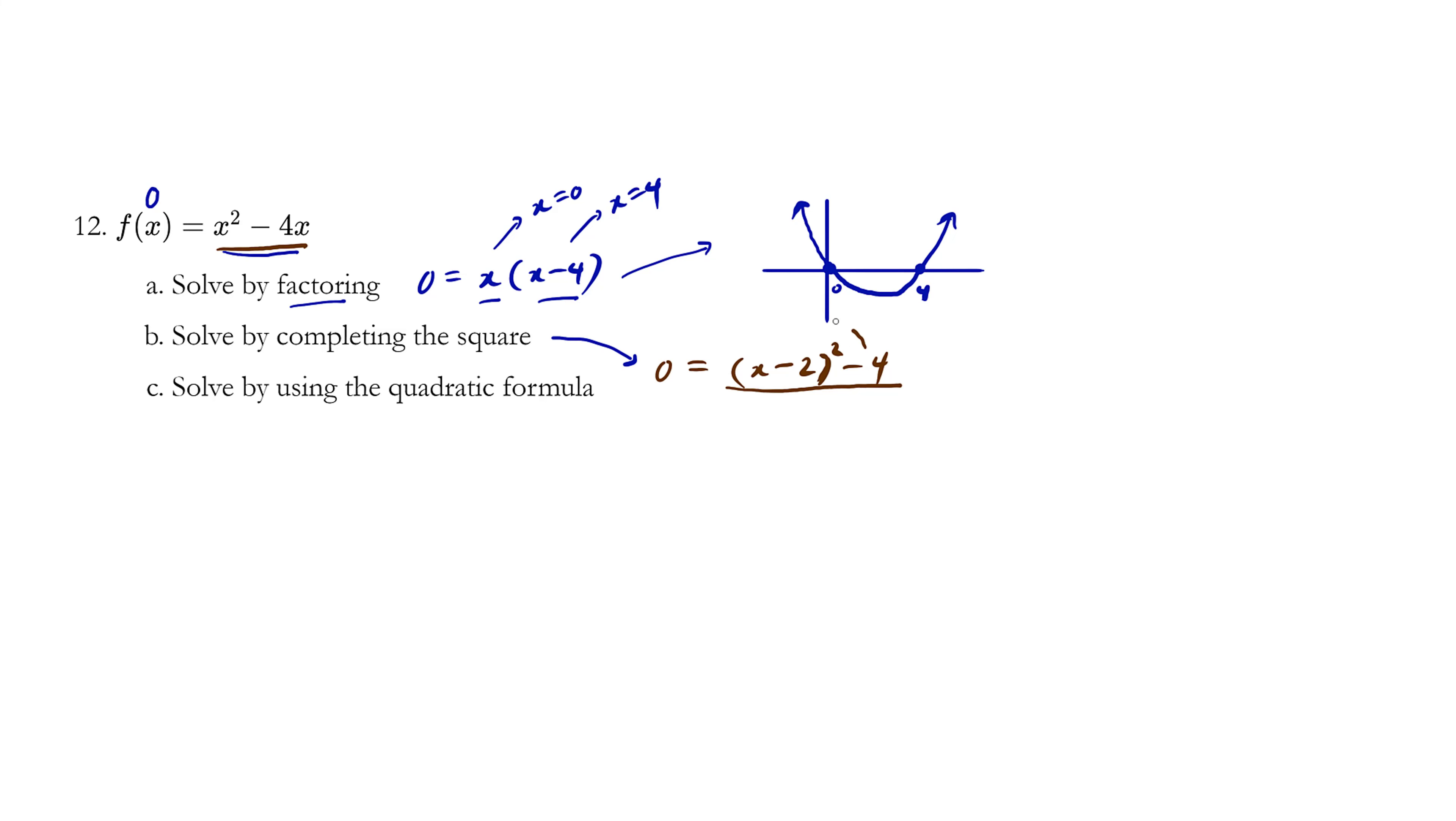The rest is just algebra. Let's throw the negative 4 over. We get 4 equals x minus 2 squared. Let's square root both sides. We get plus minus the square root of 4, which is 2. Throw the negative 2 over. We get x equals positive 2 plus minus 2.